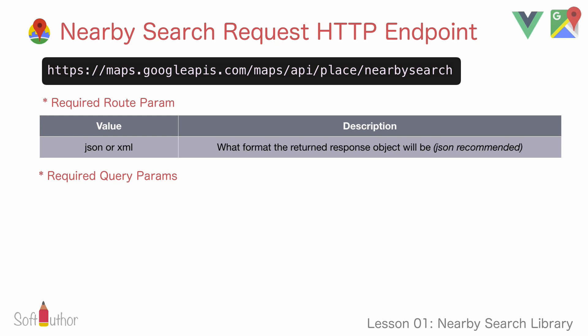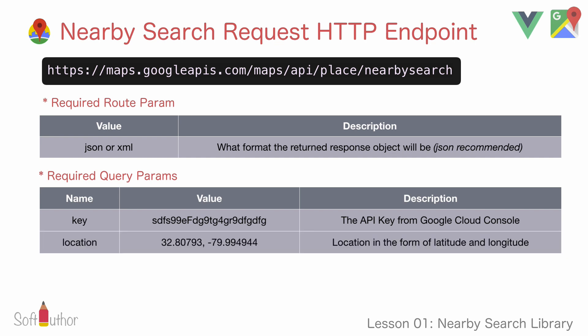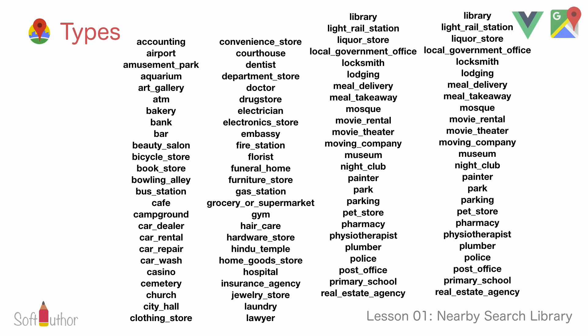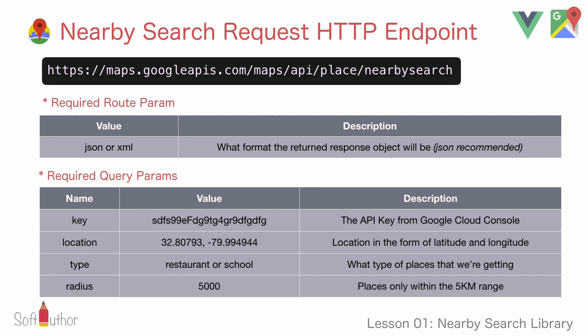There are four required query parameters. The first one is key, which is the actual API key that we can get from Google's Cloud Console. The second is location, which will be latitude and longitude as a single value separated by a comma. The third is type — the value would be restaurant, school, and so on, and you can see all the types available in the documentation. The fourth is radius, which means how far you want to get places from, and must be in meters — so if your search range is five kilometers, the value would be five thousand.